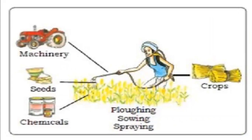Some important inputs required in agriculture are seeds, fertilizers, machinery, and labor. Operations involved are plowing, sowing, irrigation, weeding, and harvesting. Outputs include crops, wool, dairy, and poultry products. This is known as the farm system. Agriculture is the primary activity that involves cultivation of crops. Two-thirds of India's population depends on agriculture. Fishing and forestry are also parts of agriculture.